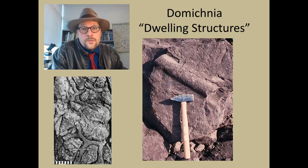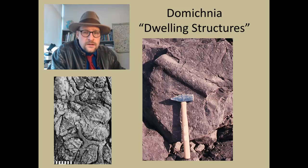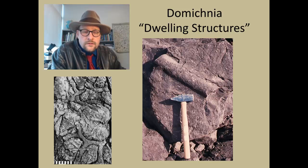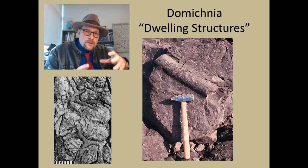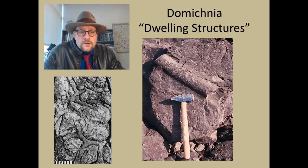The next type is domichnia — these are the dwelling structures. Often times these are burrows in which organisms live, preserved in the rock record — dwelling places for these organisms. One important thing about domichnia dwelling structures is that you will often times find the fossils of the organisms that lived in these types of burrows, so they can be identified to a particular organism. These are organisms that build burrows they actually live in, as opposed to feeding through sediment — protective areas burrowed into sediment.